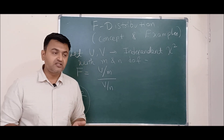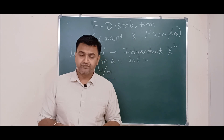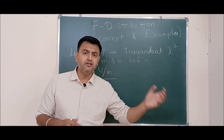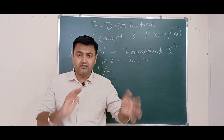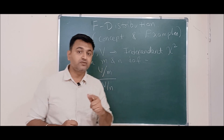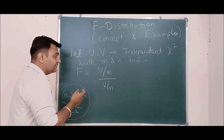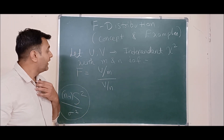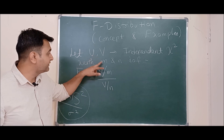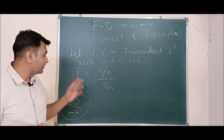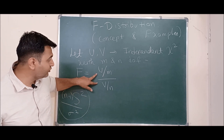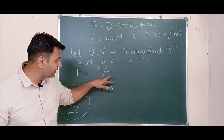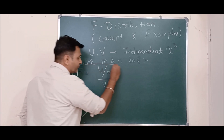What will the definition involve? Since we're playing with the ratio of variances, chi-square will naturally come into the picture. The F distribution is defined as follows: if U and V are two independent chi-square random variables with M and N degrees of freedom respectively, then F is the ratio of these two independent chi-square random variables, each divided by its degree of freedom — U divided by M, over V divided by N. This is called an F distribution or F variable.